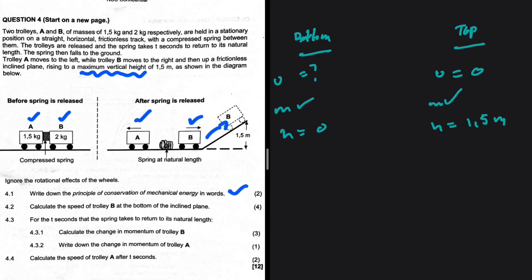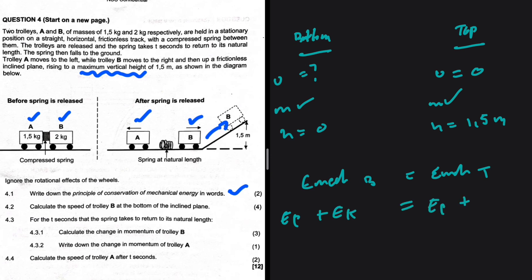This information is enough for us to use the conservation of mechanical energy. We know that the total mechanical energy at the bottom should equal the total mechanical energy at the top, because the track is frictionless. So at the bottom we have EP plus EK, and at the top we also have EP plus EK.